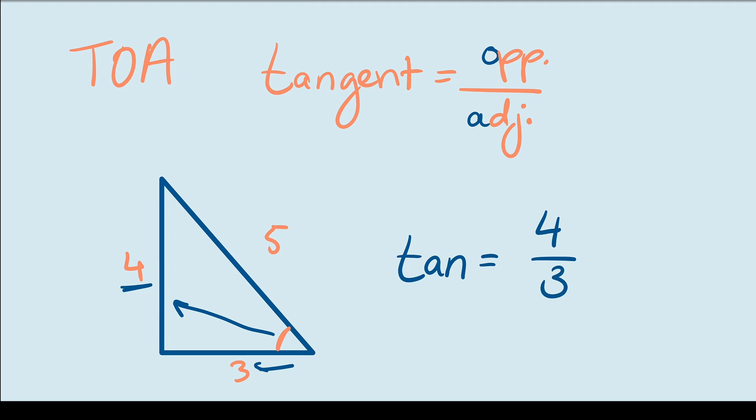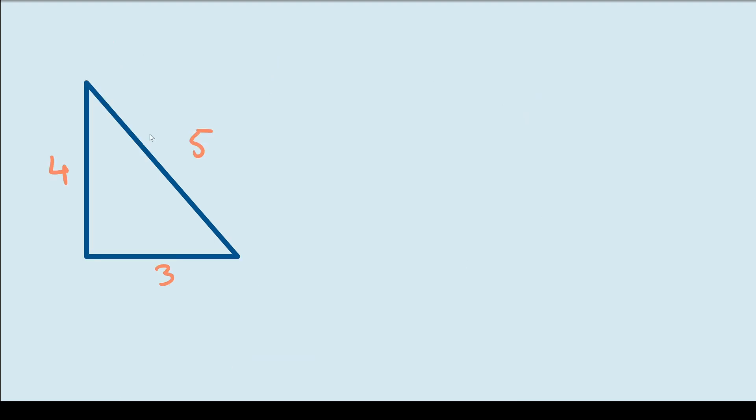Now, let's do some practice. Let's say I have that same triangle but this time I want to find the sine, cosine, and tangent for this angle. So, let's work through it together. Sine of that angle is going to be opposite over hypotenuse. Opposite to that side is the side that's 3 units long and again the hypotenuse is 5 units. So, our sine is going to be 3 over 5.